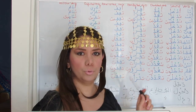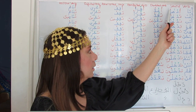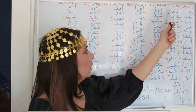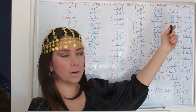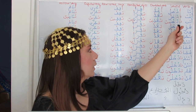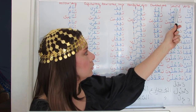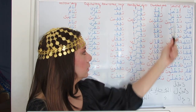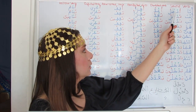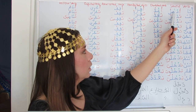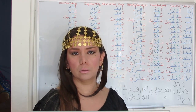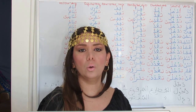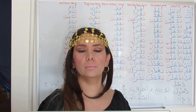Since it is the indicative mood, you will see a Dhamma on the last letter, Lam — the last radical — and a Sukun on top of the first radical, Dal. There is a Dhamma on top of the middle radical. Why? There is no rule for it; it is somewhat random.